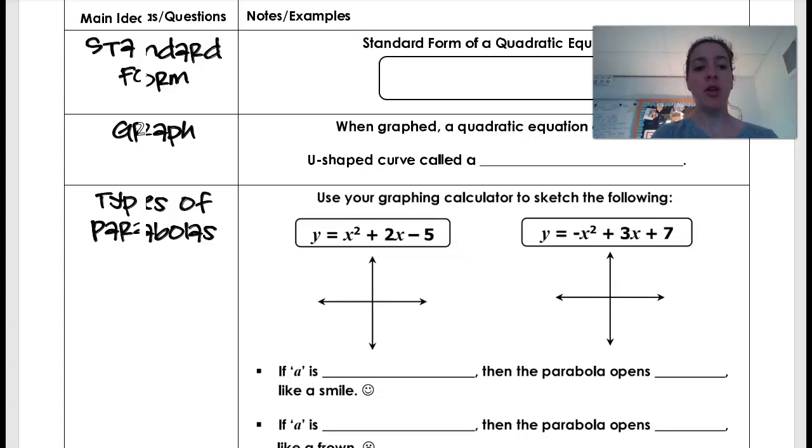So the first thing we want to notice is the standard form. We're going to see several different forms throughout this unit, but we're going to start with the standard form. And our standard form is y equals ax squared plus bx plus c. So you'll see that this is different from our linear equations because I have this exponent here. I've got an x squared term. So how I know that this is in standard form is you see I have my largest exponent first, since that two is the biggest, and then I get smaller and smaller, and then my letters just correspond with that. So a is first, b is second, and then c.